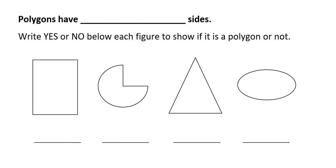Polygons also have to have straight sides with no intersections. So we'll write polygons have straight sides. And we'll look at the shapes below.